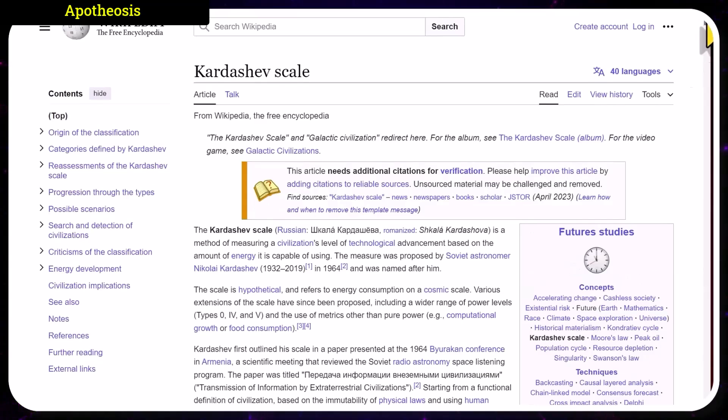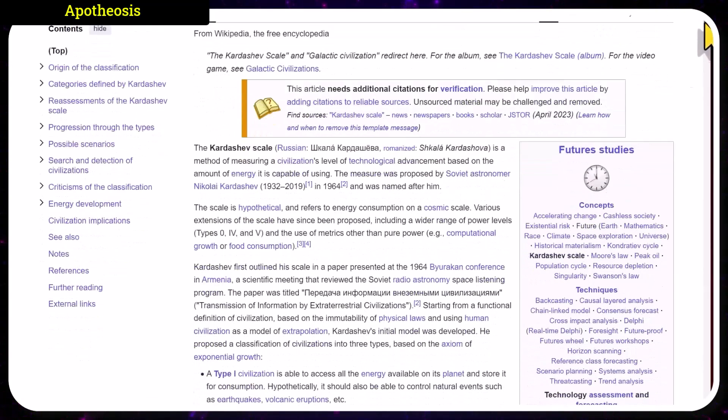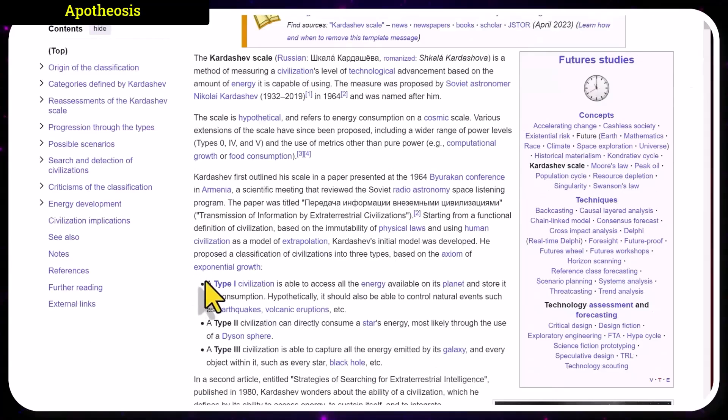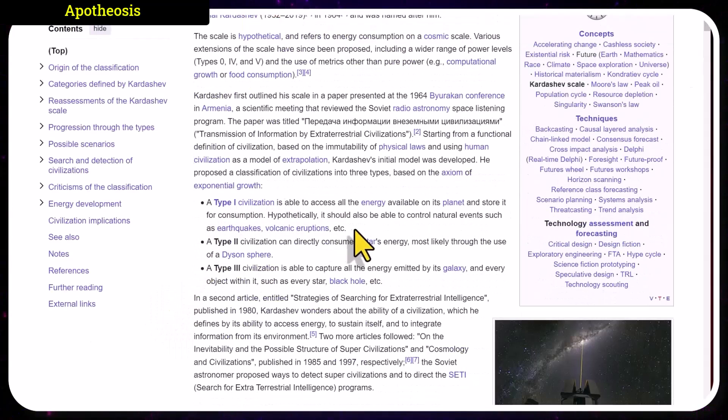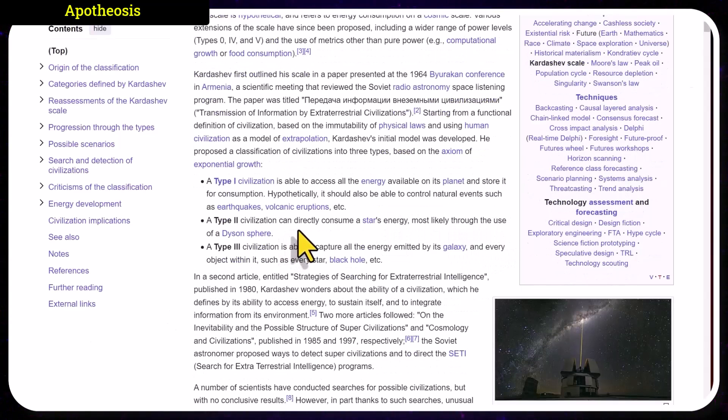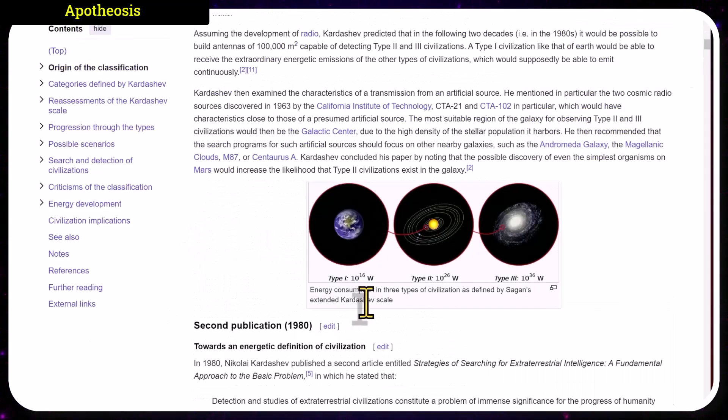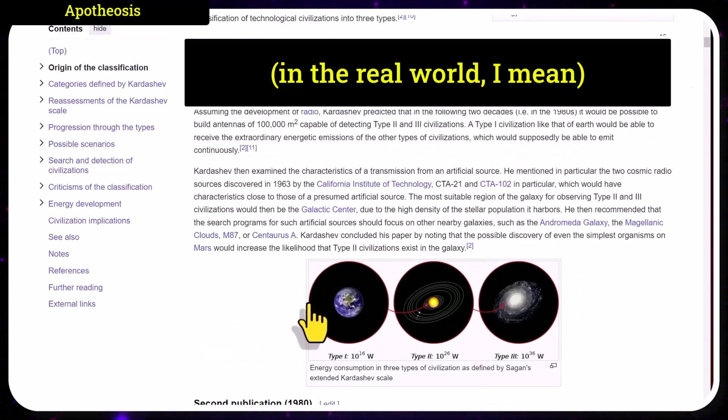The Kardashev scale, if you're not familiar, is basically kind of a way to rank civilizations or seeing how advanced they are. For example, a Type 1 civilization is able to access all the energy available on its planet and store it for consumption. A Type 2 civilization can directly consume a star's energy, most likely through the use of a Dyson sphere, basically harnessing the entire energy of a sun. And Type 3 would be something that's able to harness the energy of an entire galaxy or black holes. I guess in this scenario, we would be approaching Type 1 as humans.